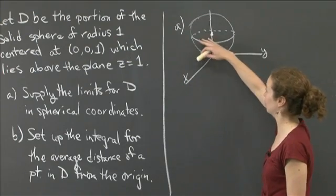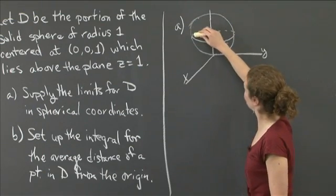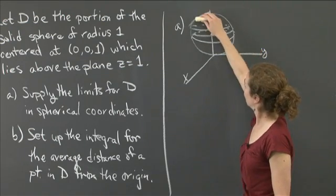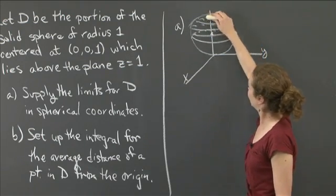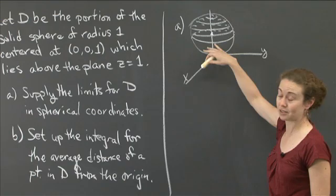And that's the solid sphere I want to be considering. And then I'm going to be removing the bottom half. I'm only going to be looking at the part that is above the z equals 1 plane. So it's actually going to be all the circular slices that are in the top half, sort of the upper hemisphere of this sphere. And so it's the solid region there. That's D.